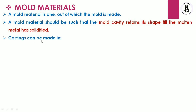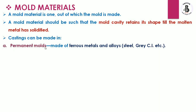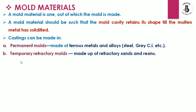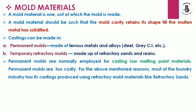Castings can be made using permanent molds. In the case of permanent molds for ferrous metals and alloys, these are made with steel or gray cast iron materials. The second type is temporary refractory molds, which are made of refractory sands and resins. Permanent molds are normally employed for castings with low melting points and are used for mass production, but they are costly.